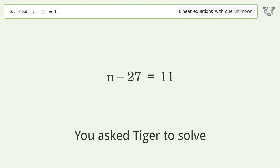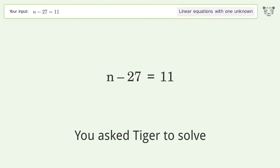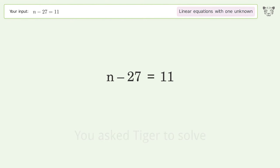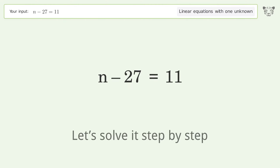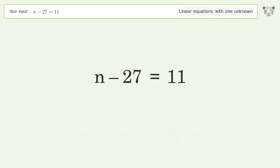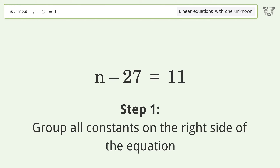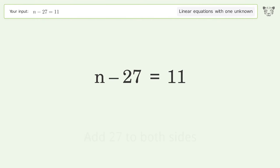You asked Tiger to solve this — it deals with linear equations with one unknown. The final result is n equals 38. Let's solve it step by step: group all constants on the right side of the equation, then add 27 to both sides.